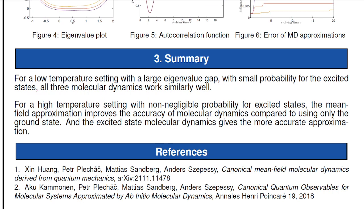As a summary, for a low temperature setting with a large eigenvalue gap, the probability for the excited state is small, so all three molecular dynamics methods work similarly well. For a high temperature setting with non-negligible probability for excited states, the mean-field approximation can improve the accuracy of molecular dynamics over using only the ground state. The excited state molecular dynamics gives more accurate approximation, but is also more expensive and difficult. The references include the first paper now in archive, and a second reference on previous work on excited state molecular dynamics. Thank you very much.